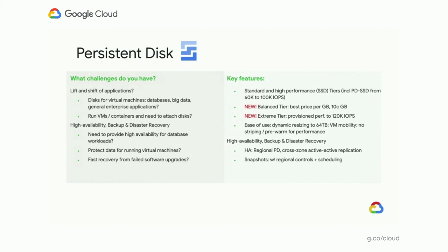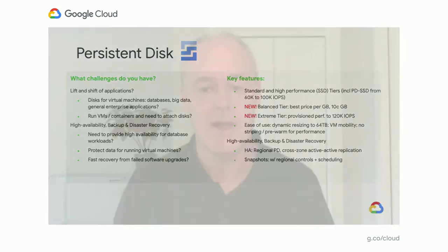For high availability, backup, and DR with persistent disk: for high availability you can create a regional disk between two different zones with active-active synchronous replication, which is super important if you want to build an application that can survive a zone failure and recover quickly — typically for something like a database. We also have controls for taking snapshots to protect your data. You can take a disk, snapshot it, and store that snapshot in a different region. You can schedule snapshots, which works well with traditional backup and recovery workflows.